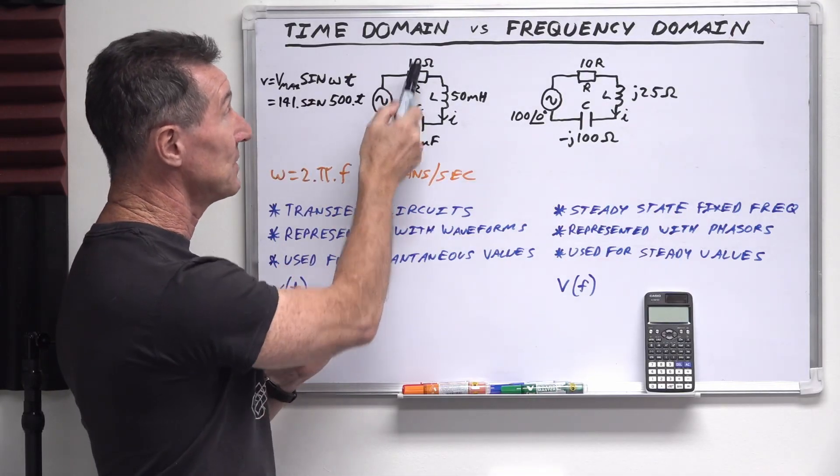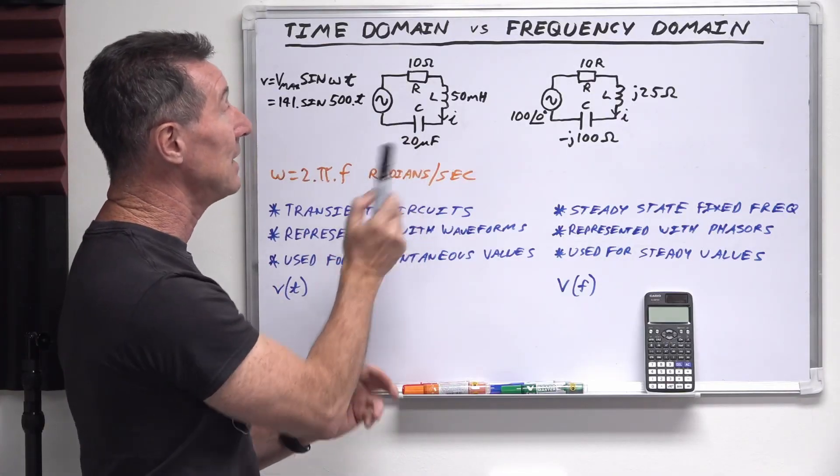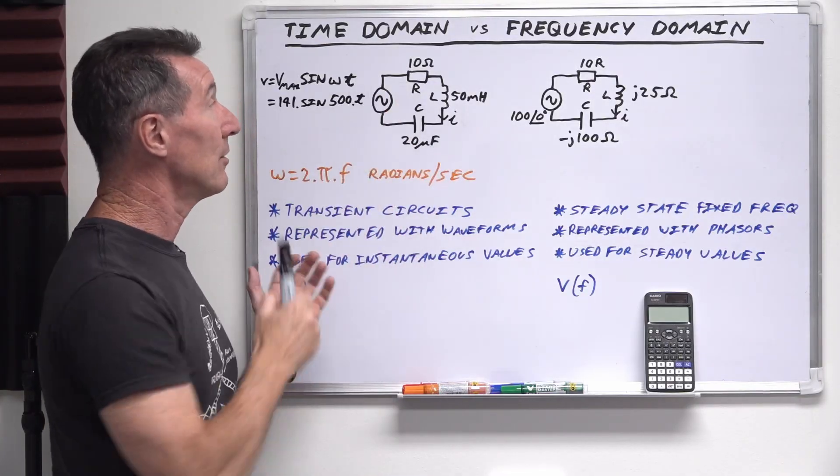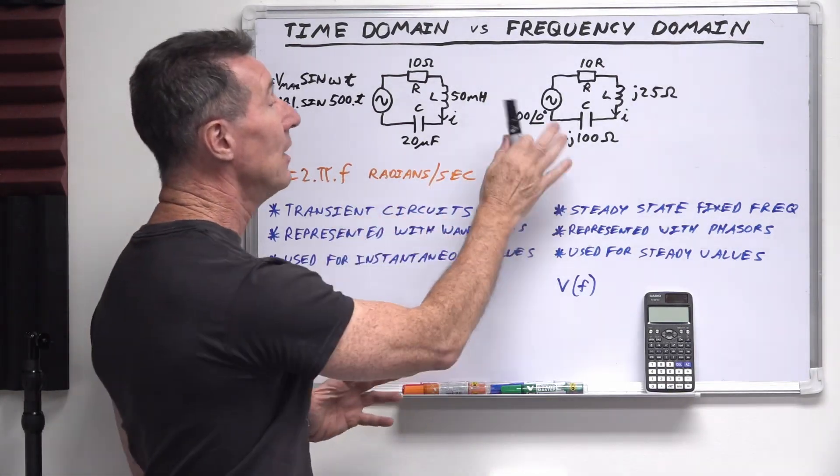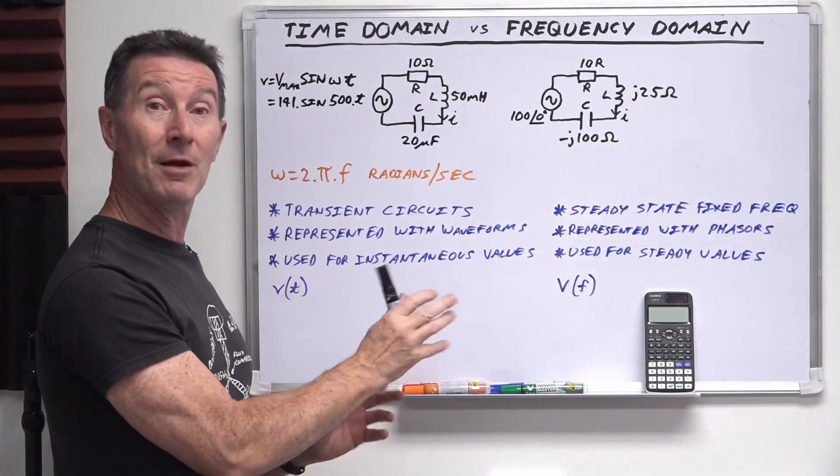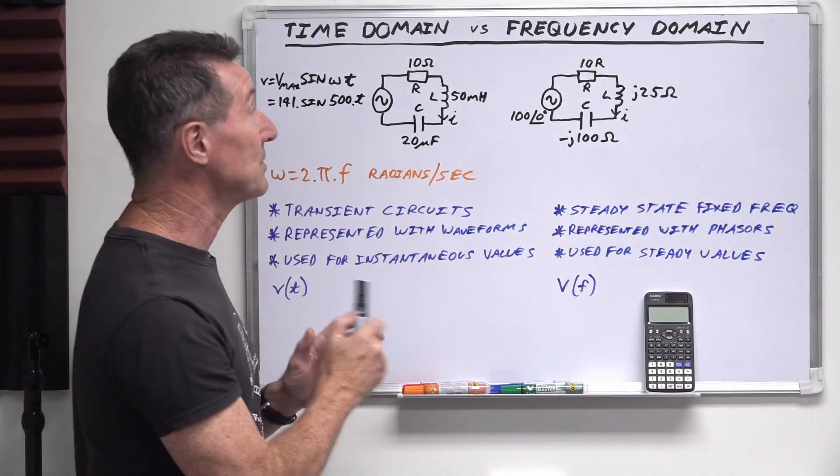So resistance in ohms, inductance in Henrys, and capacitance in farad here. And then you've got your current flowing through that. Whereas frequency domain over here, we've moved over to a more a phasor representation instead of an instantaneous value representation.